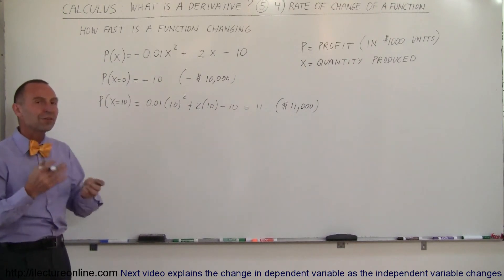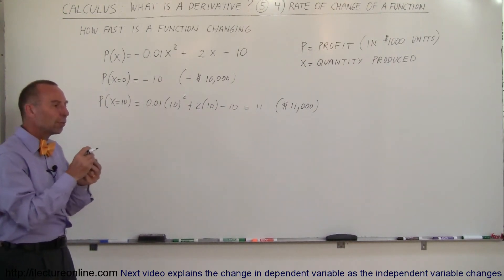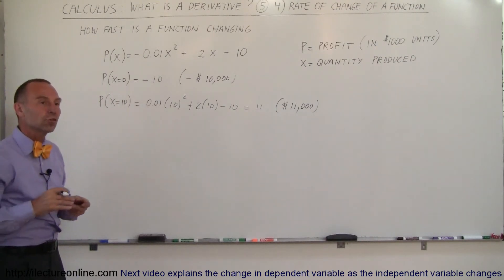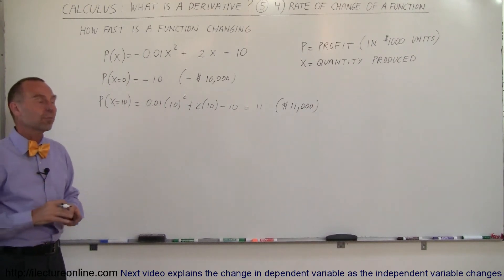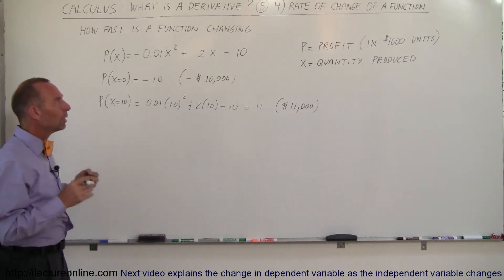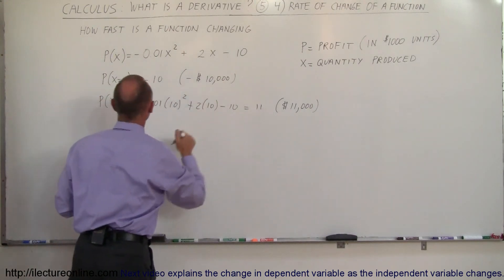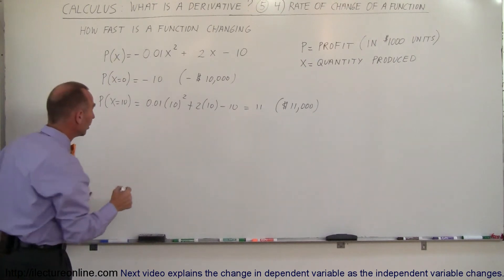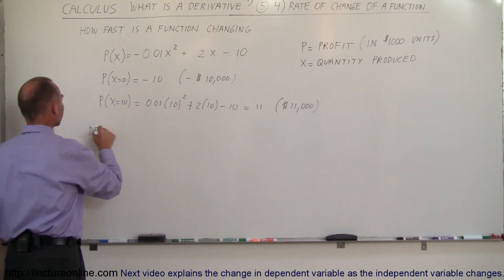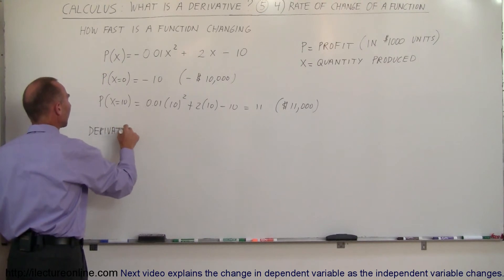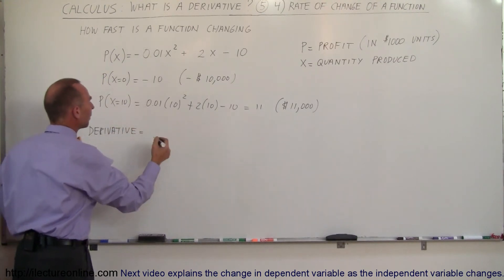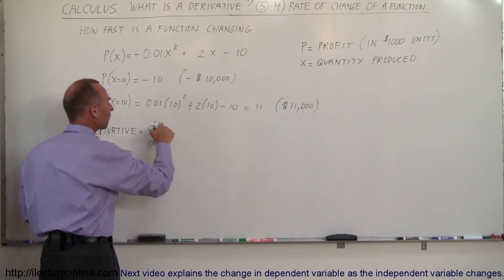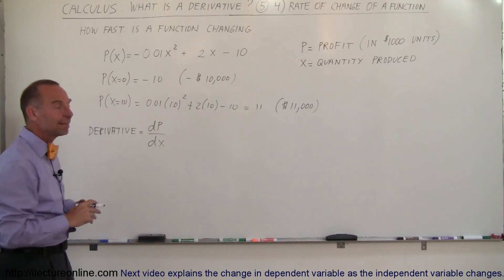So what does the derivative of that function represent? The derivative represents how fast your profit is changing as you make more and more units — if you make one more unit, how fast is your profit changing? Since x is the independent variable and p is the dependent variable, the derivative is the slope of the tangent line, represented by dp/dx: the change in profit as x changes.